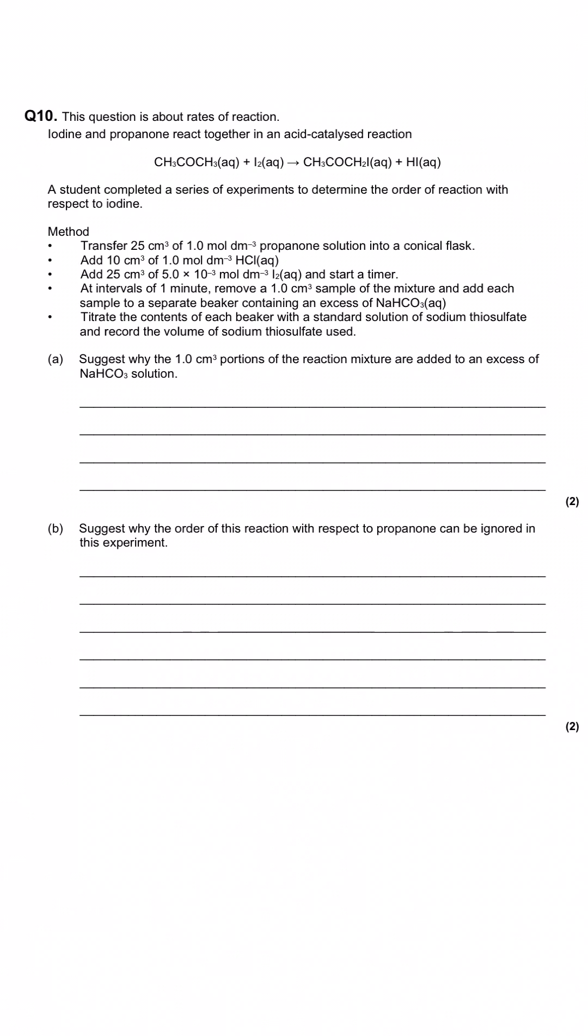This question is about rates of reaction. Iodine and propanone react together in an acid-catalyzed reaction. Here we've got the chemical equation for this, with the propanone and the iodine. This is acid-catalyzed, which is why the H+ ions aren't shown in the overall chemical equation.